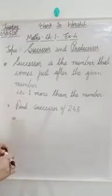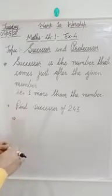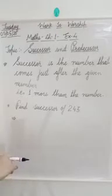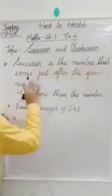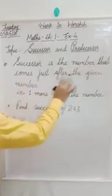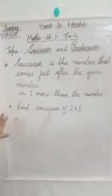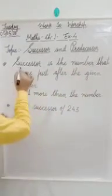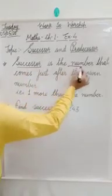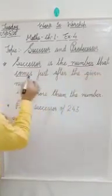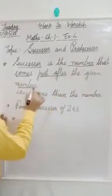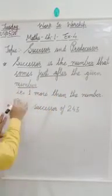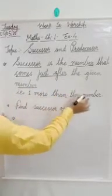First of all, we are going to discuss about the successor of the number. What is the successor? Successor is the number that comes just after the given number — that is, one more than the number.